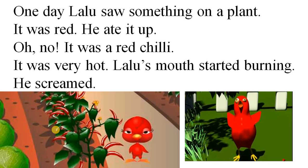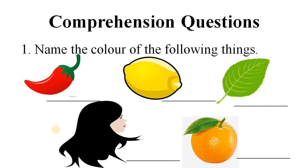Let's come to the comprehension questions. Question number one: Name the colors of the following things. Look at the picture. The color of the chili is red. The color of the lemon is yellow, leaf is green, hair is black, orange is orange color.